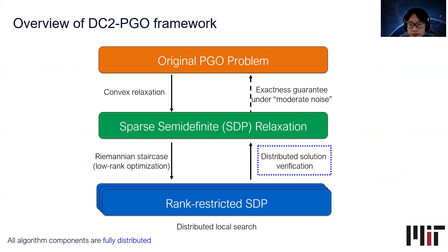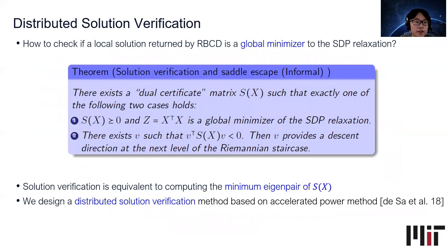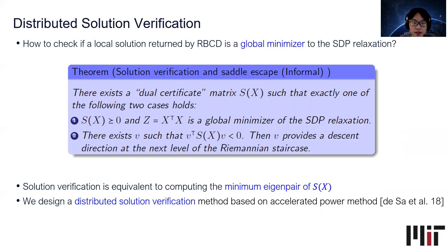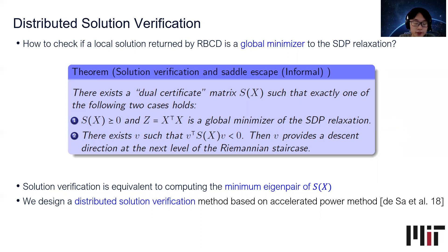The last algorithmic piece is distributed solution verification. The goal is to check whether a local solution returned by RBCD is indeed a global minimizer of the SDP relaxation. This is answered by the following theorem: there exists a dual certificate matrix S depending on the local solution X such that exactly one of two conditions holds. First, if S is positive semi-definite, then X corresponds to a global minimizer of the SDP relaxation. Otherwise, the eigenvector corresponding to the minimum eigenvalue of S provides a descent direction at the next level of the Riemannian staircase. At a high level, solution verification is equivalent to computing the minimum eigenpair of S, so we design a distributed solution verification procedure based on accelerated power iteration.